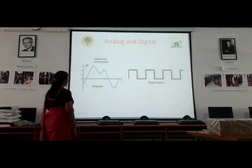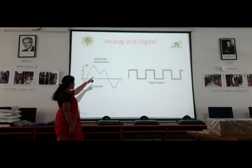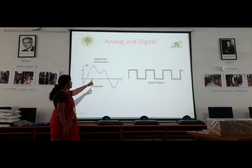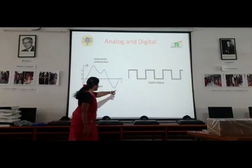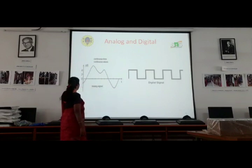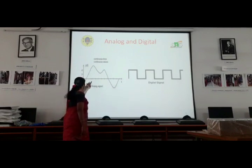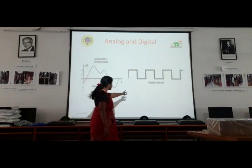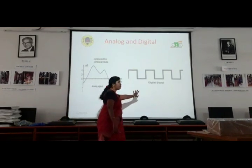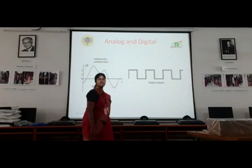The analog signal is also called a continuous-time signal. In a graph where the x-axis is the time period and the y-axis is amplitude, each point in time has a slightly different value. So this is a continuous-time signal. Digital signals consist of zeros and ones — that is digital signals.